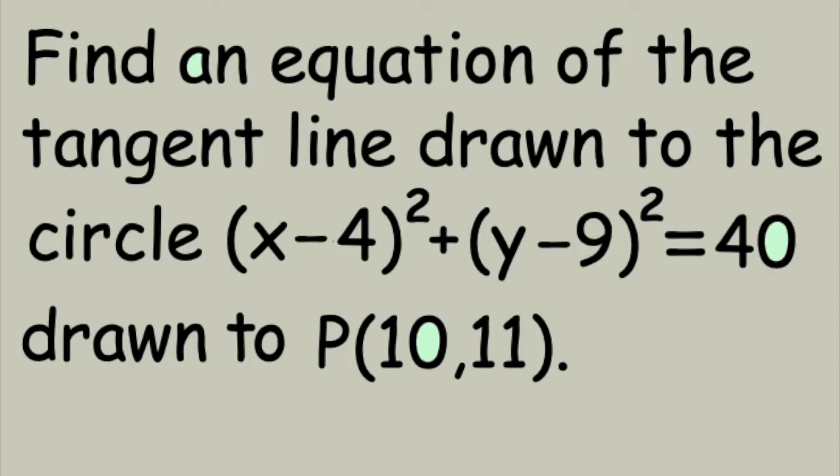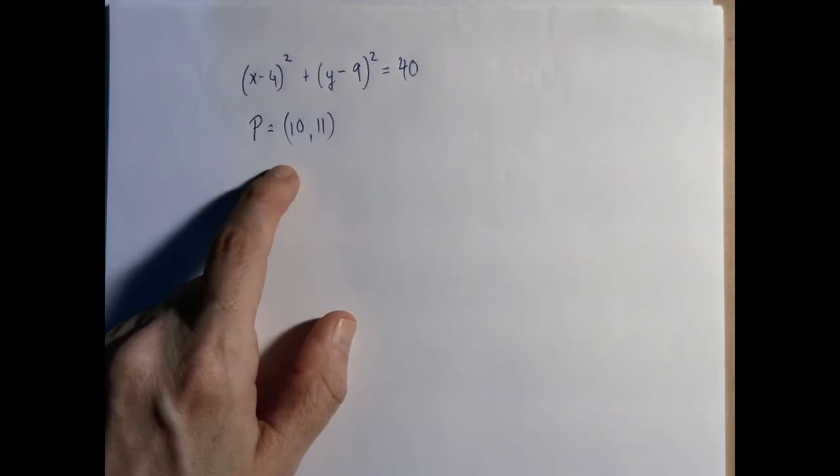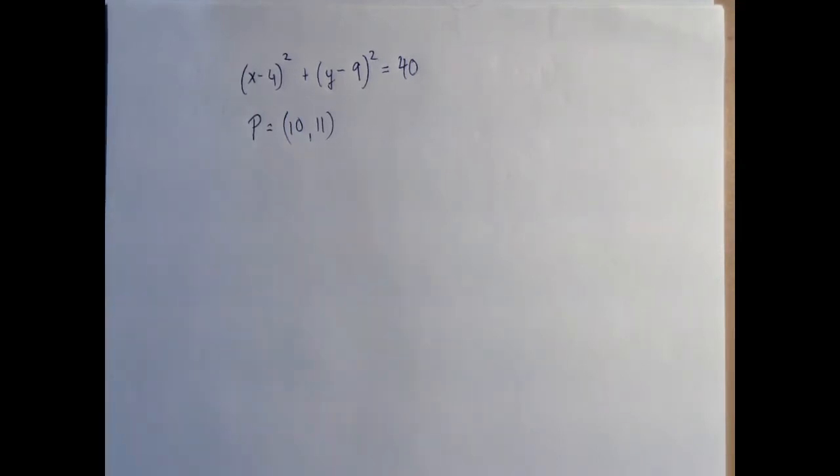We are given the equation of a circle and the coordinates of a point. This point is supposed to be on the circle, and our job is to find the equation of the tangent line drawn to the circle that passes through this particular point. Basically, this must be the point of tangency.